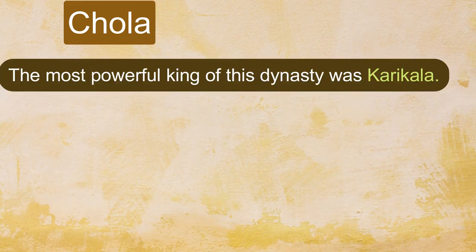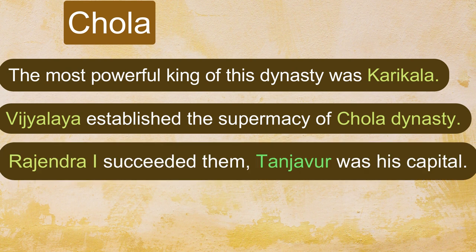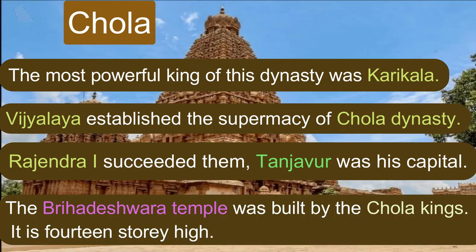Chola dynasty: The most powerful king of this dynasty was Karikala. After Karikala, Vijayalaya established the supremacy of the Chola dynasty. Rajendra the first succeeded the Chola rulers and made Tanjore his capital. The famous Brihadeshwara temple was built by the Chola kings, and it is 14 stories high.